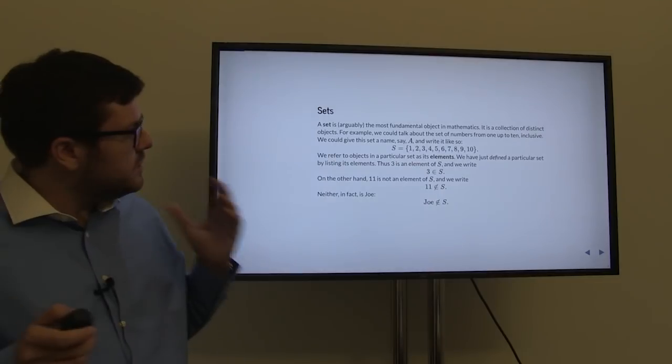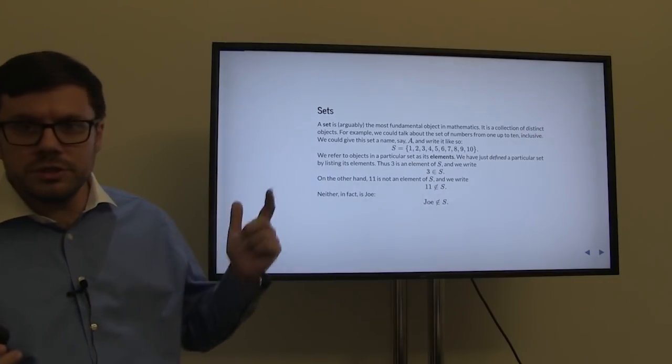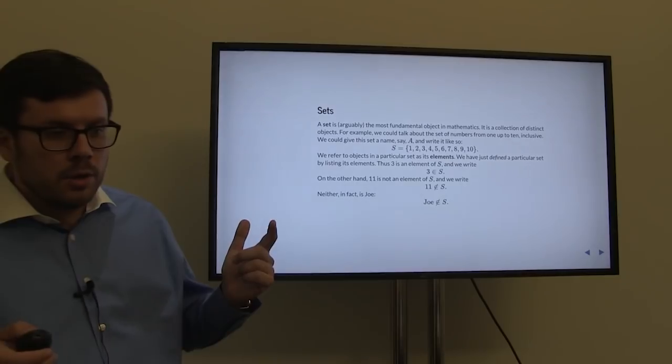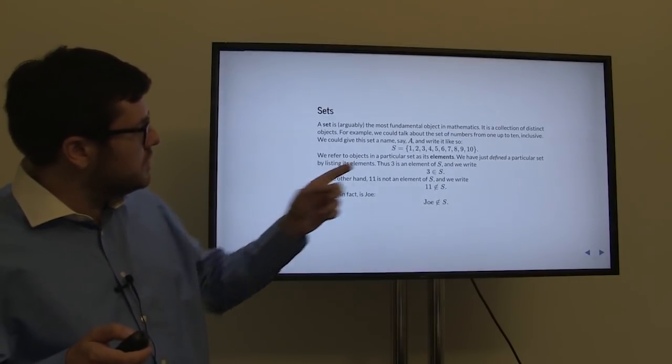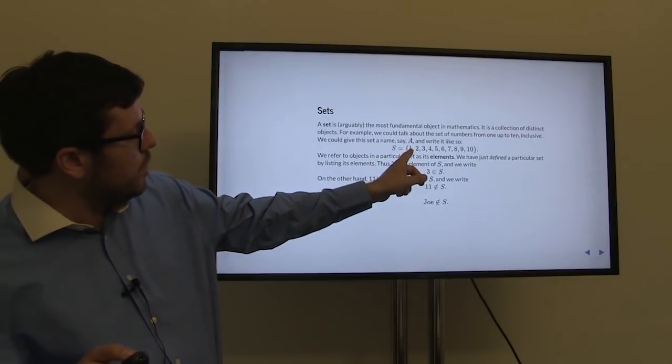So what is a set? A set is a collection of distinct objects. For example, we can talk about a set of 10 numbers: 1, 2, 3, 4, 5, 6, 7, 8, 9, 10.